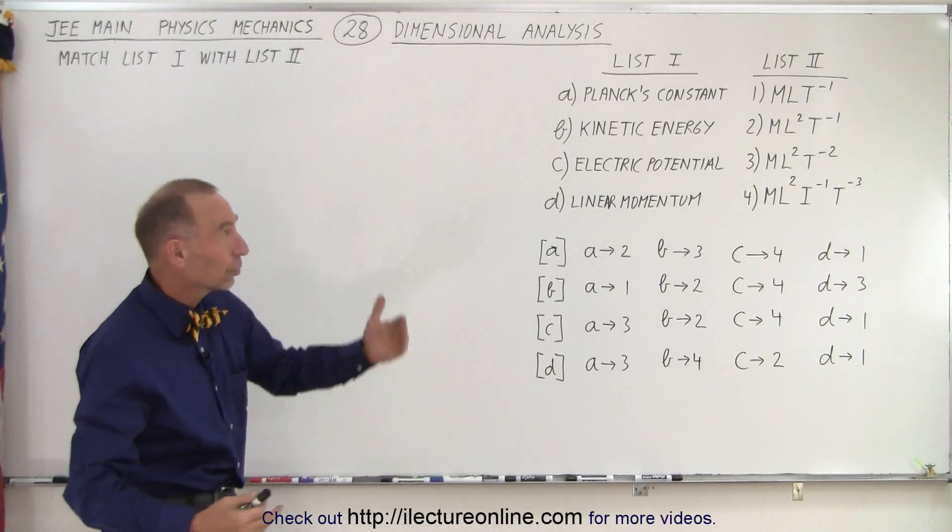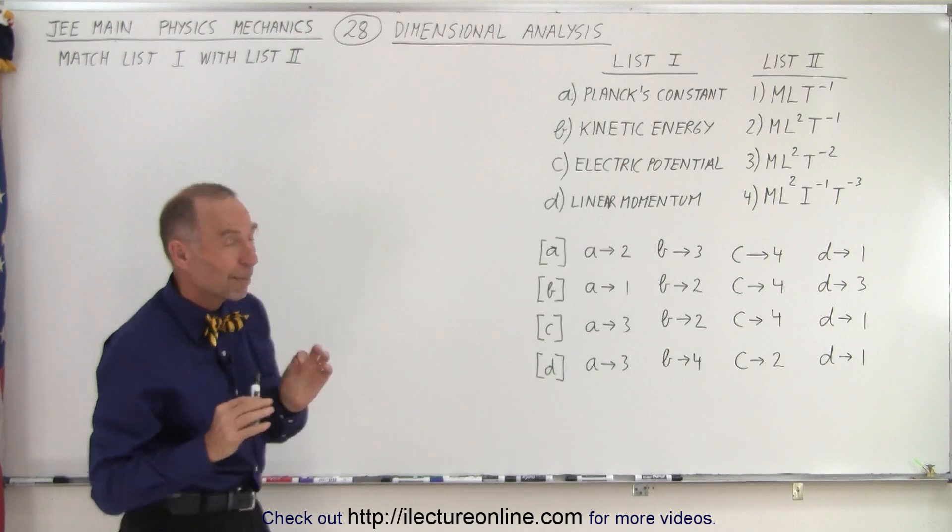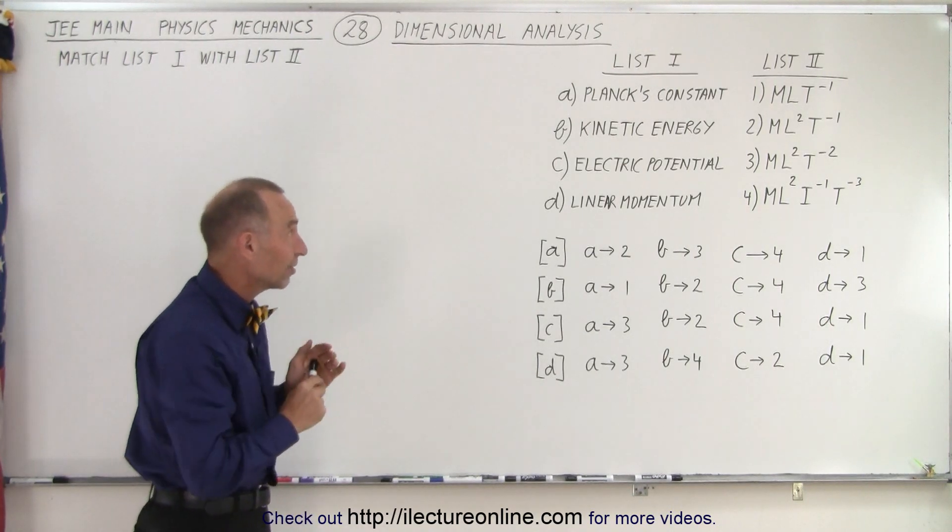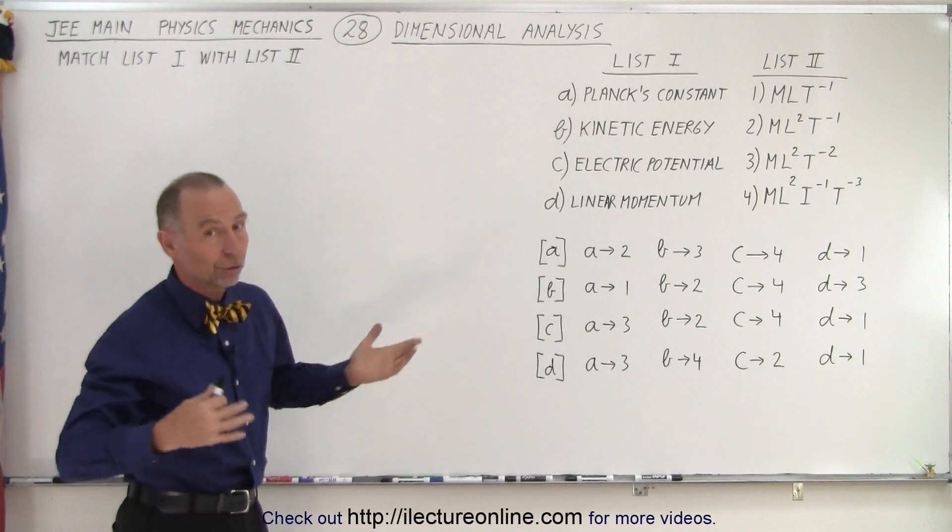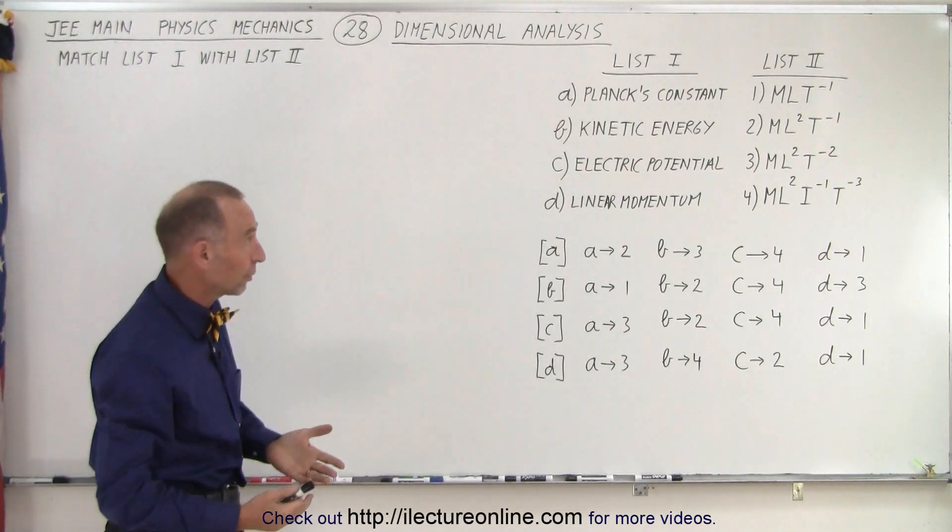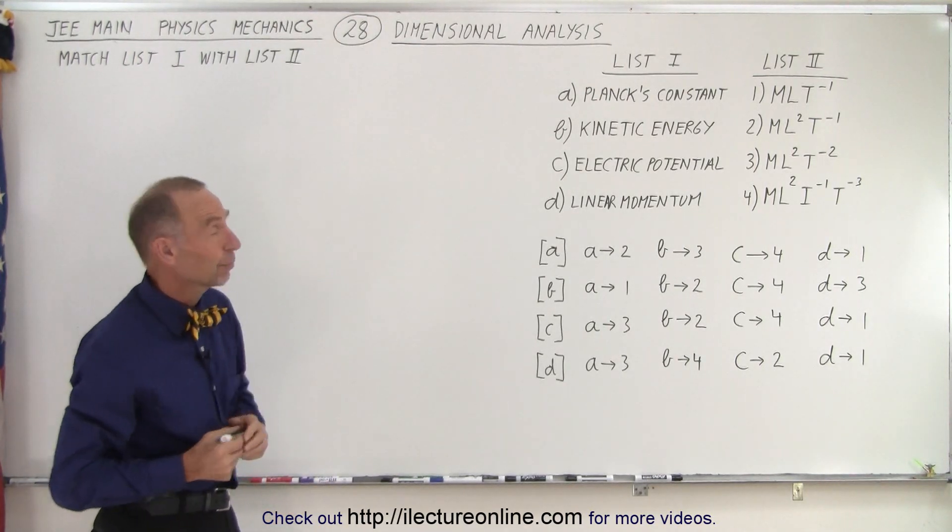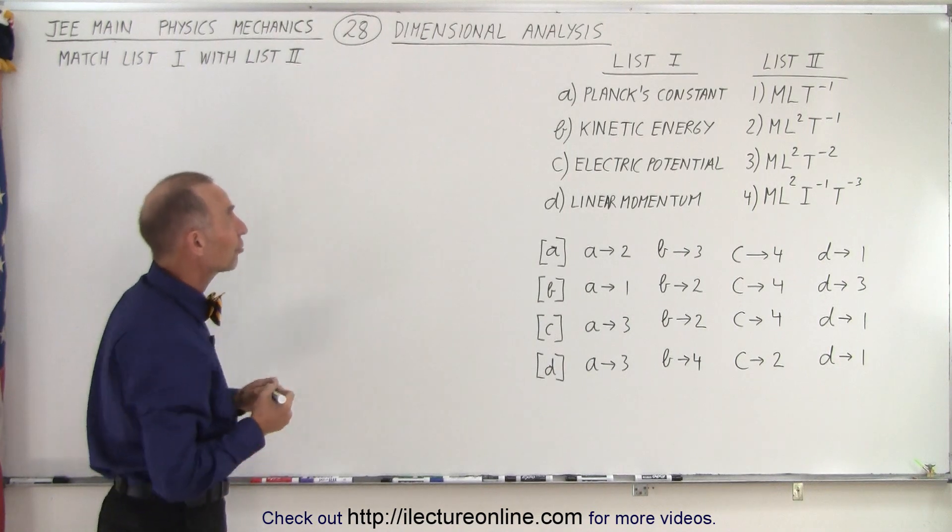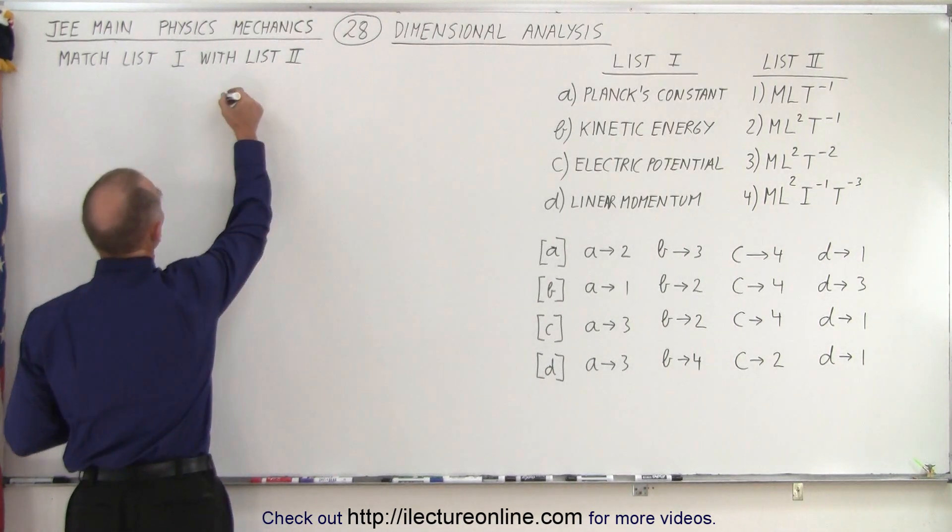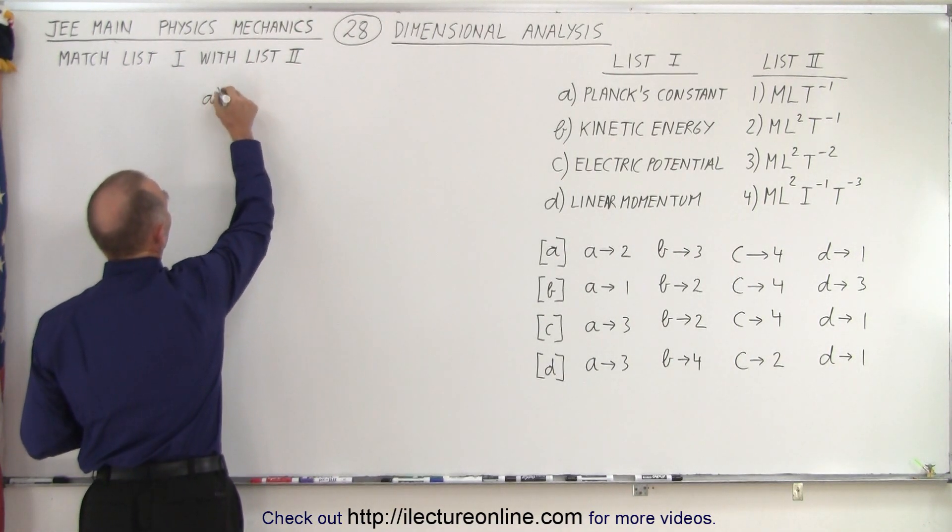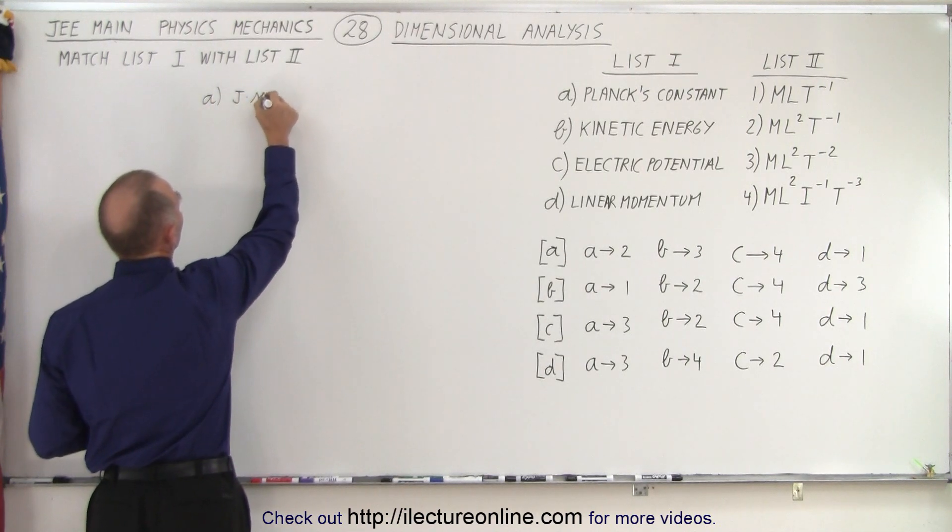So let's go ahead and go through all those four. Now remember that you have to actually know some of these things because they don't give you Planck's constant. If you don't know Planck's constant or the units associated with it, you may have trouble doing this particular problem. Well, the units for Planck's constant are joules times seconds.